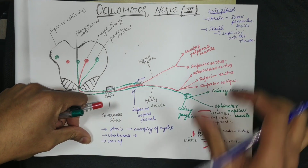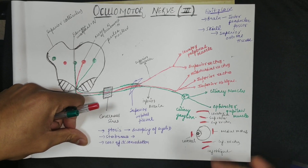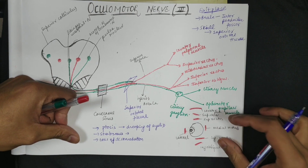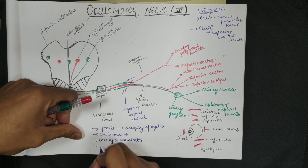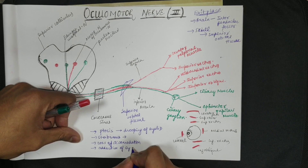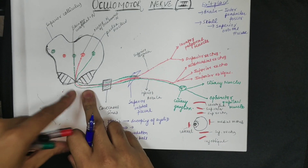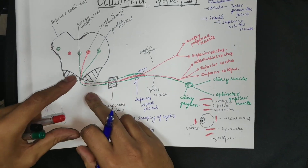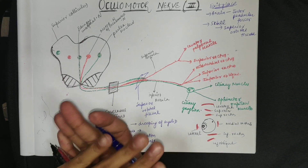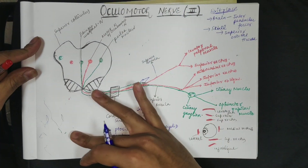Third, loss of accommodation can occur due to injury to the ciliary muscle. Fourth, loss of adduction of the eyeball occurs if the medial rectus is injured. Additionally, because the nerve lies between the superior cerebellar artery and posterior cerebral artery, atherosclerosis or high blood pressure can compress the nerve due to any bulge in these two arteries.